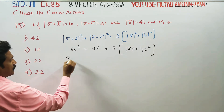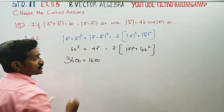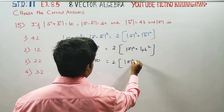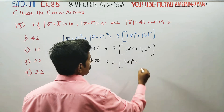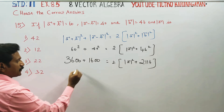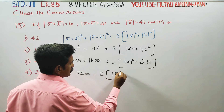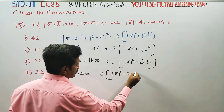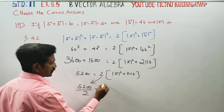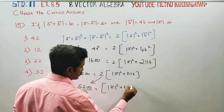Next, 60 squared is 3600 and 40 squared is 1600. Adding these gives 5200, which is equal to 2 times magnitude of A squared plus 46 into 46, that is 2116. So 5200 is equal to 2 times magnitude of A square plus 2116.